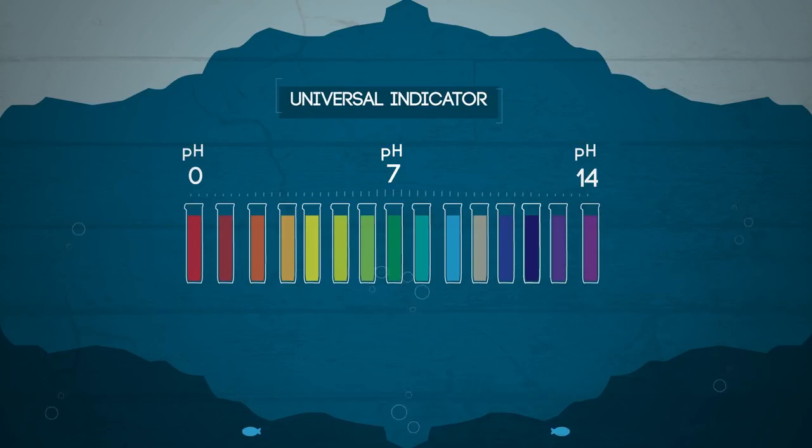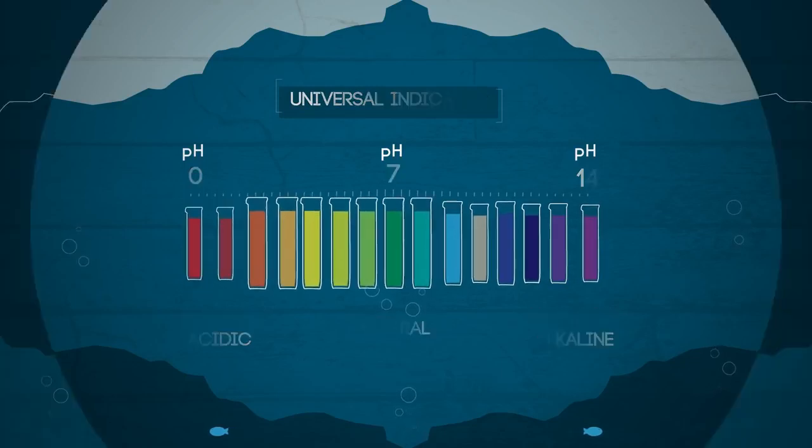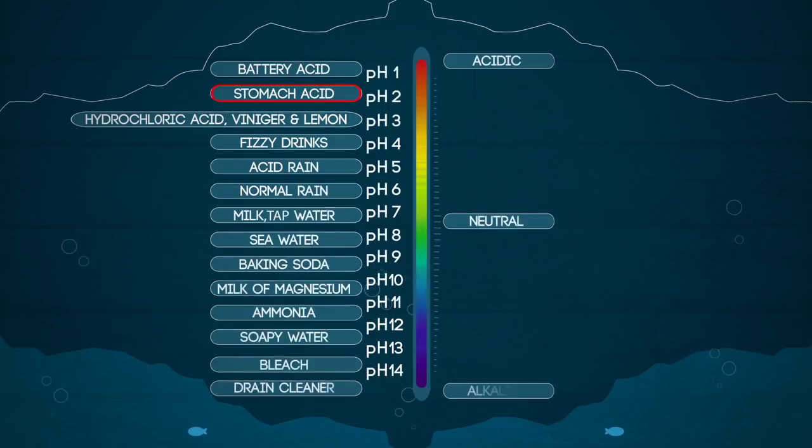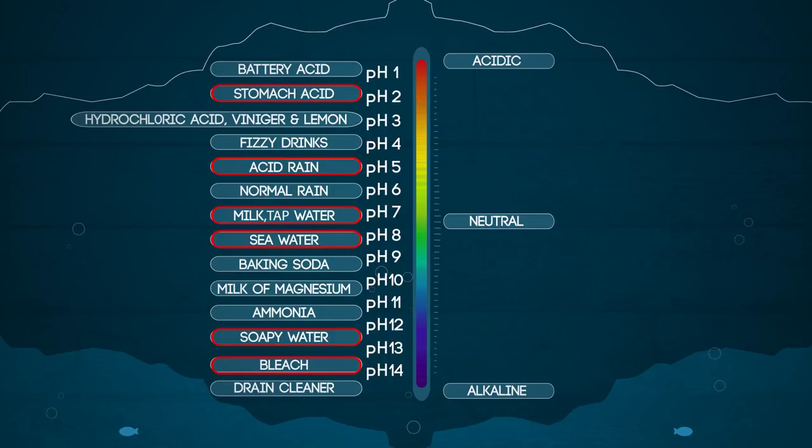The pH runs from 0 to 14, with 0 being extremely acidic, 7 being neutral, and 14 being extremely alkaline. Stomach acid is a strong acid with a pH of about 2. Acid rain has a pH of about 5.5. Milk is neutral with a pH of 7. Seawater is slightly alkaline. Soapy water is a strong alkaline, and bleach is a really strong alkaline with a pH of 13.